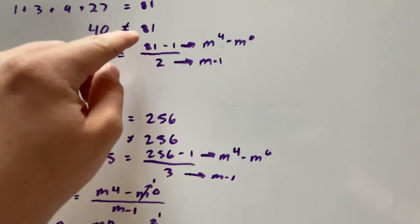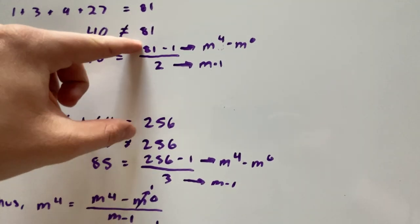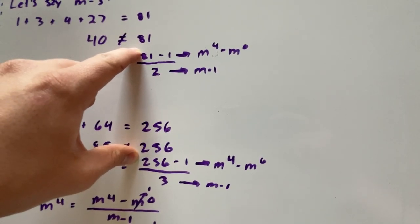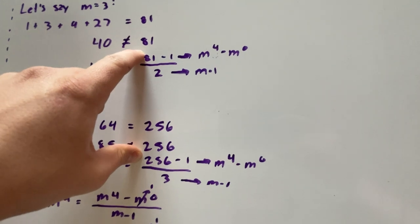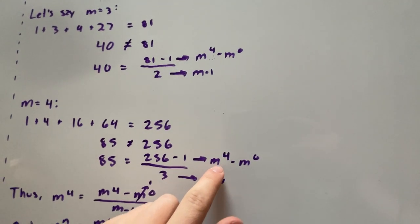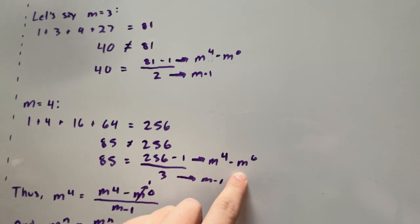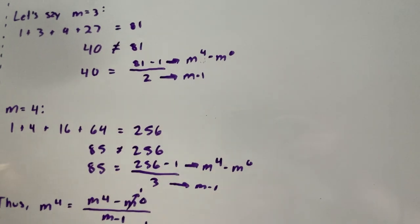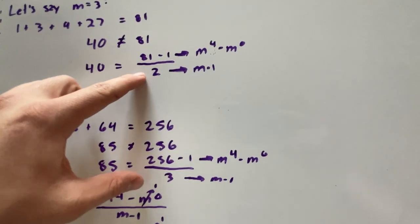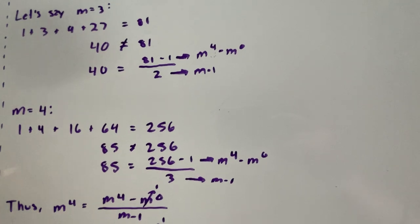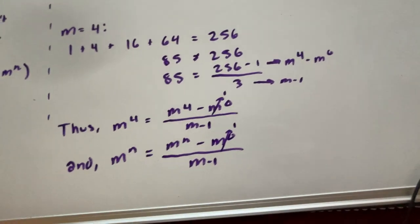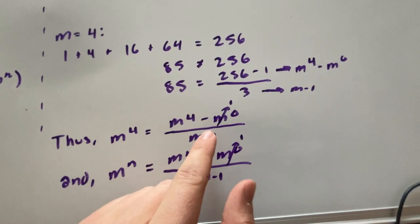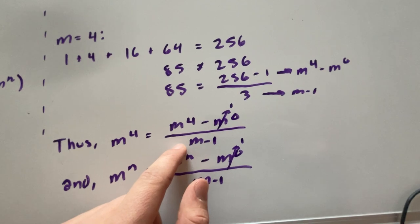If you may notice, this top numerator term for here m equals 3 and m equals 4 is literally just m to the power of 4 minus m naught. So here it's just 4 to the power of 4 minus 1, which is just m to the power of 0. It's the same thing up here but m is equal to 3. And for the denominator it's just m minus 1.